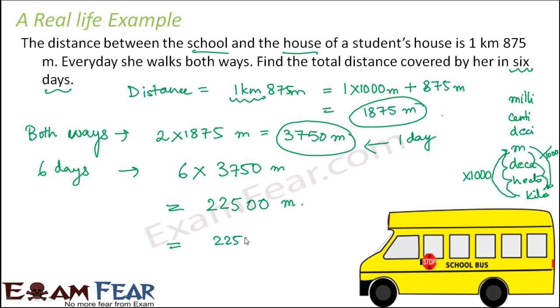So when you divide this by 1000, what happens? You get 22.5 kilometers. So this is the total distance that she covers in 6 days. It is 22.5 kilometers or 22,500 meters.